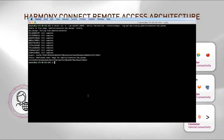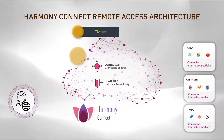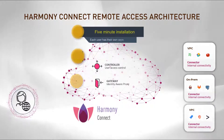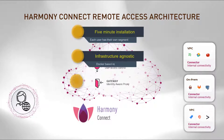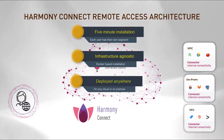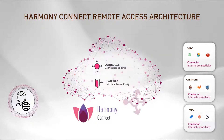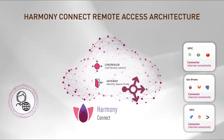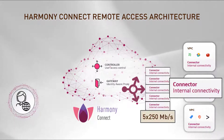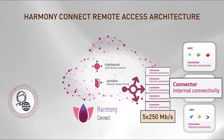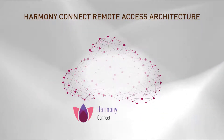Harmony Connect installations take 5 minutes to deploy. It is completely infrastructure agnostic — it can be deployed anywhere, any cloud or on-premise docker host. The system is a cloud service with a built-in load balancer that can handle multiple connectors in the same data center, allowing scaling up the number of connectors on the same site to support higher bandwidth.